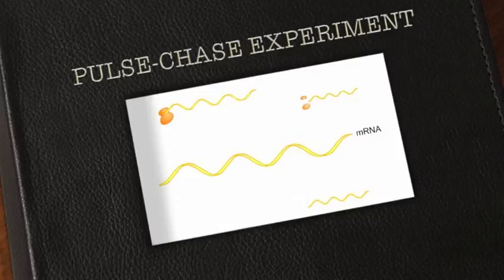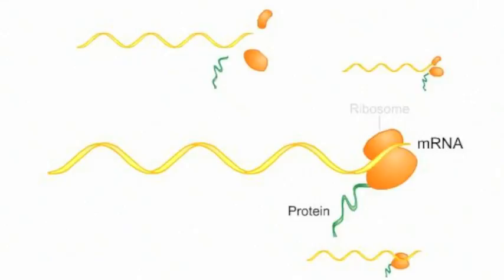In a pulse chase experiment, an investigator tracks the progression of a radiolabeled molecule, such as an amino acid, through a cell.